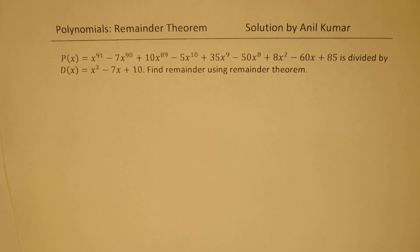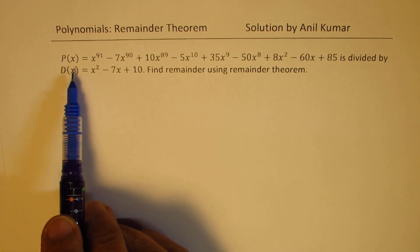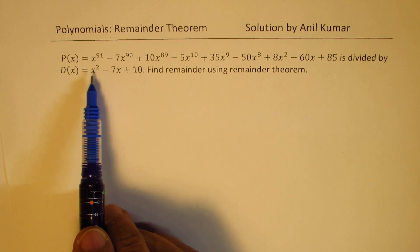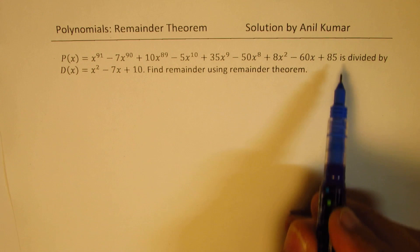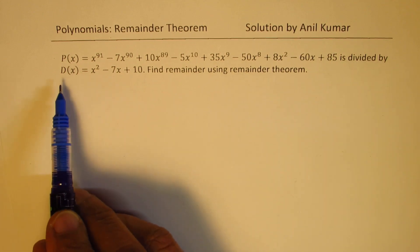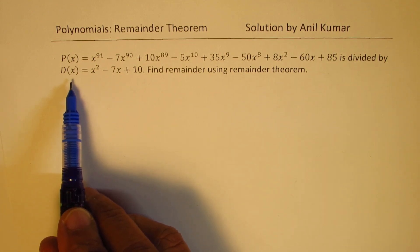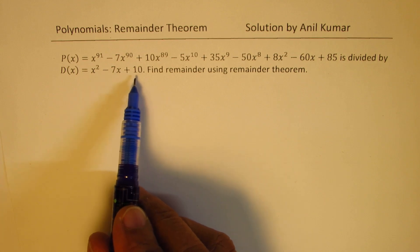I hope its solution will help many others. Let us go through this solution. We have a polynomial P(x) given to us as x to the power of 91 minus 7x to the power of 90 and so on, and it is divided by the divisor D(x) = x squared minus 7x plus 10.